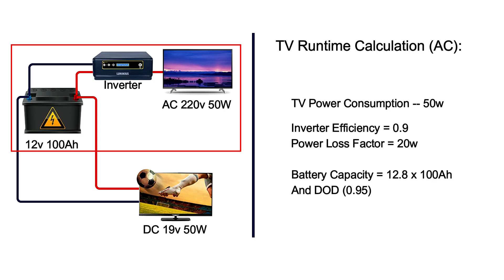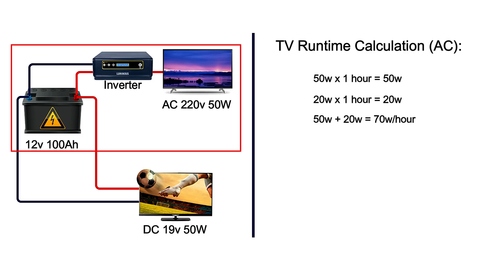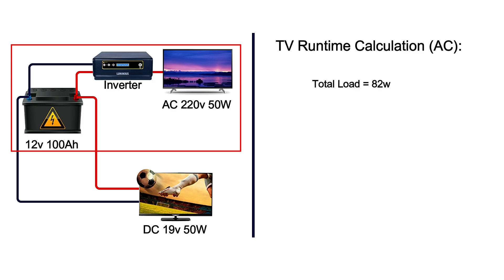We first need to determine the total amount of load or power going on our battery bank. Our TV of 50 watts uses 50 watts of energy per hour from the battery bank, and the DC-to-AC conversion loss factor is 20 watts per hour. So 50 watts plus 20 watts gives us 70 watts of energy usage per hour. Next, we factor in inverter efficiency and battery depth of discharge, giving us a safety factor of 1.16, which multiplied by 70 watts gives us 81.87 watts — approximately 82 watts.